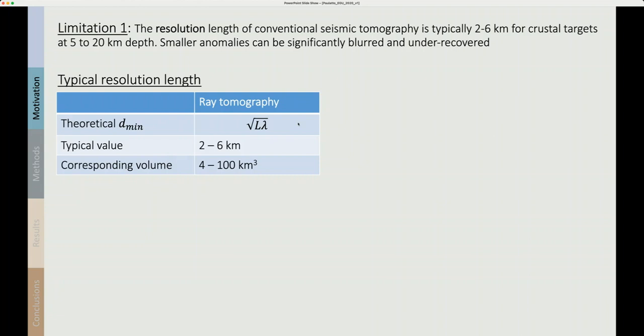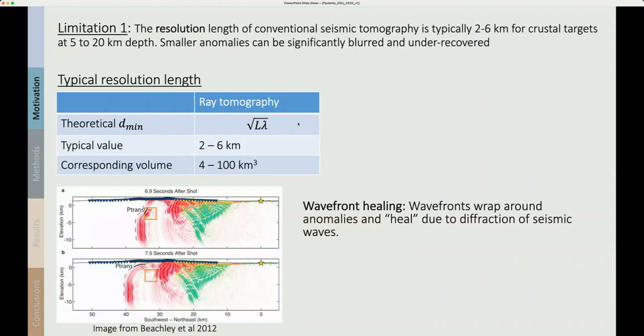This happens because of wavefront healing. This is a phenomenon consisting of wavefronts wrapping around low velocity anomalies and healing behind them due to the diffraction of seismic waves. It means that the travel times are not sensitive to the low velocity anomaly resulting in a limited recovery of the anomalies, a high Vp bias and a likely underestimate of melt fraction.